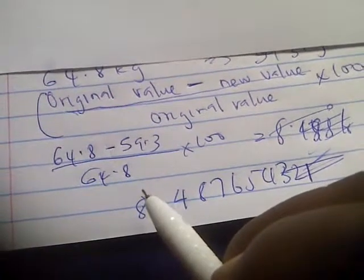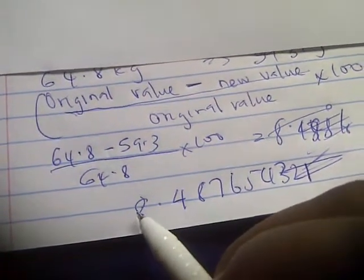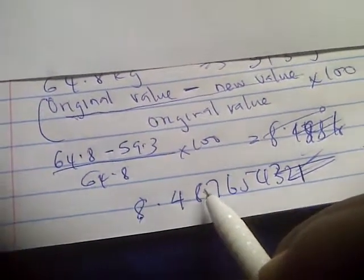Now, for significant figures, you start from the first non-zero digit. So it's going to start from here. You count three places: 1, 2, 3.